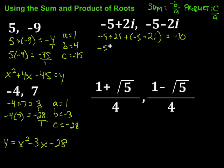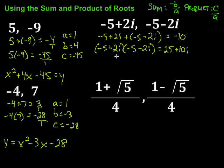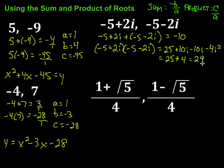Then I take the product: negative 5 plus 2i, multiplied by negative 5 minus 2i. FOILing that out: negative 5 times negative 5 is 25; negative 5 times negative 2i is plus 10i; 2i times negative 5 is minus 10i; and 2i times negative 2i is negative 4i squared. Cleaning up: the plus 10i and minus 10i cancel, and since i squared equals negative 1, we get negative 4 times negative 1 which is plus 4. So we have 25 plus 4, which equals 29.